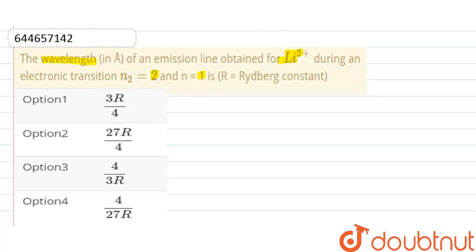So here, first of all, the formula of wavelength. It is equals to R Z square, one divided by n1 square minus one divided by n2 square.